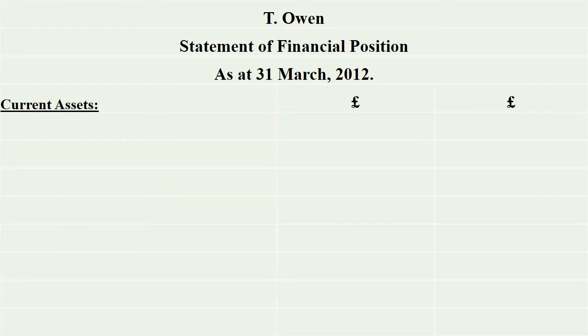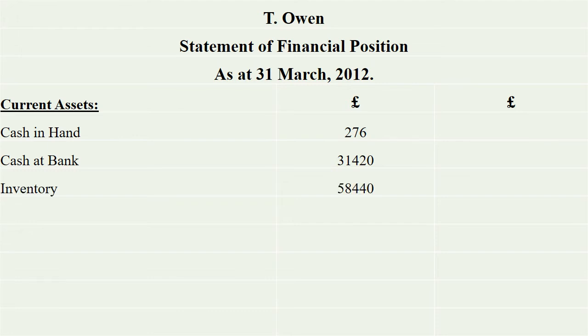Then we will have assets. First, we will have current assets. Current assets have cash in hand: 277. Then we will have cash at bank: 31,420. Then we will have inventory: 58,440.